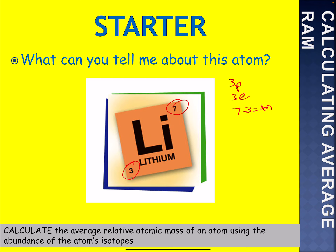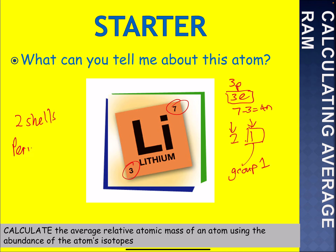Just following on from that, three electrons — the way they will be arranged, there will be two in the first shell and one in the outer shell. That one tells you it's in group one of the periodic table. And looking at this: shell number one, shell number two — two shells means it's in period number two of the periodic table.